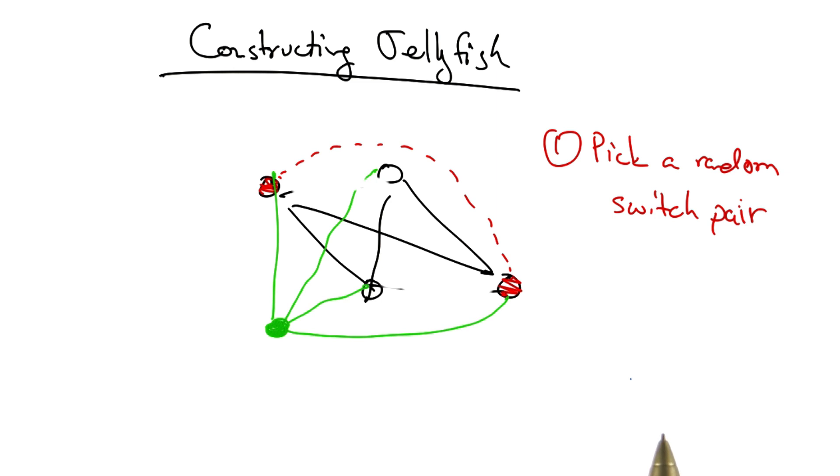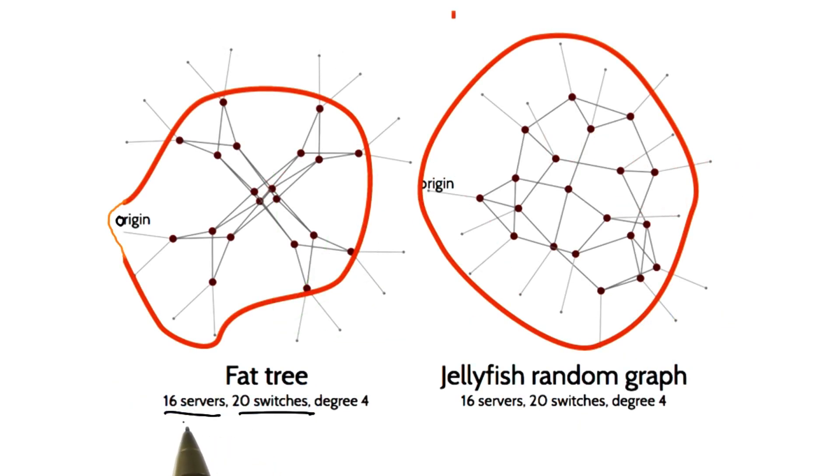For a particular equipment cost using identical equipment, the jellyfish topology can achieve increased capacity by supporting 25% more servers. This higher capacity is achieved because paths through the topology are shorter than in a fat tree topology. Consider a topology with 16 servers, 20 switches, and a fixed degree of 4 for both the fat tree topology and the jellyfish random graph.